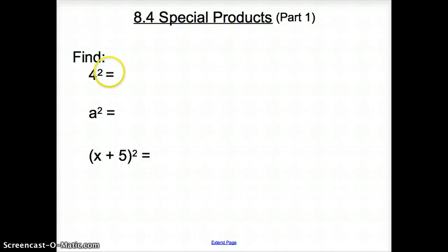We all know that when we have 4 squared, it is 4 times 4, which gives me 16. And also, a squared is the same as a times a. So now when we have this polynomial squared, how do we represent it? It is x plus 5 times x plus 5.